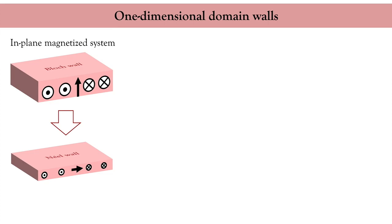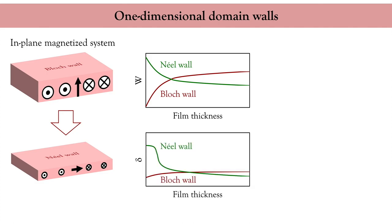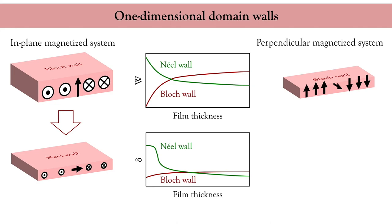This tendency is illustrated in the graphs. The top graph shows the evolution of the energy of Bloch and Néel walls in an in-plane magnetized layer as a function of the thickness, while the bottom graph shows the evolution of the corresponding domain wall width. There is a clear crossover between Néel and Bloch configurations. One can apply the same reasoning to a perpendicularly magnetized wire: if the cross section is wide, the Bloch wall is favored, but upon narrowing the wire, the Néel wall will be favored — the dipolar coupling favors Néel walls when reducing the width.